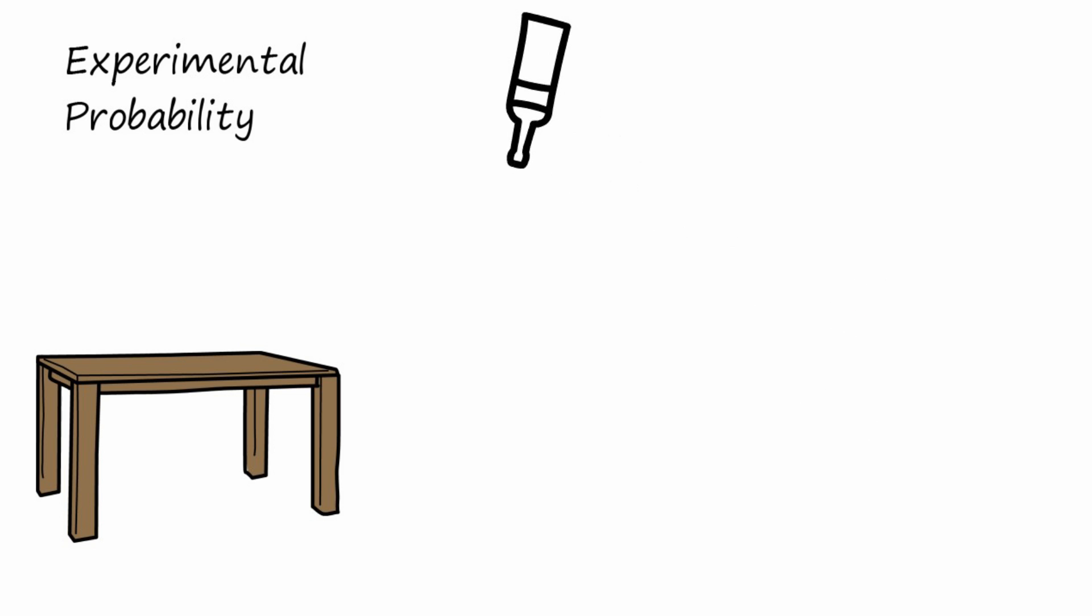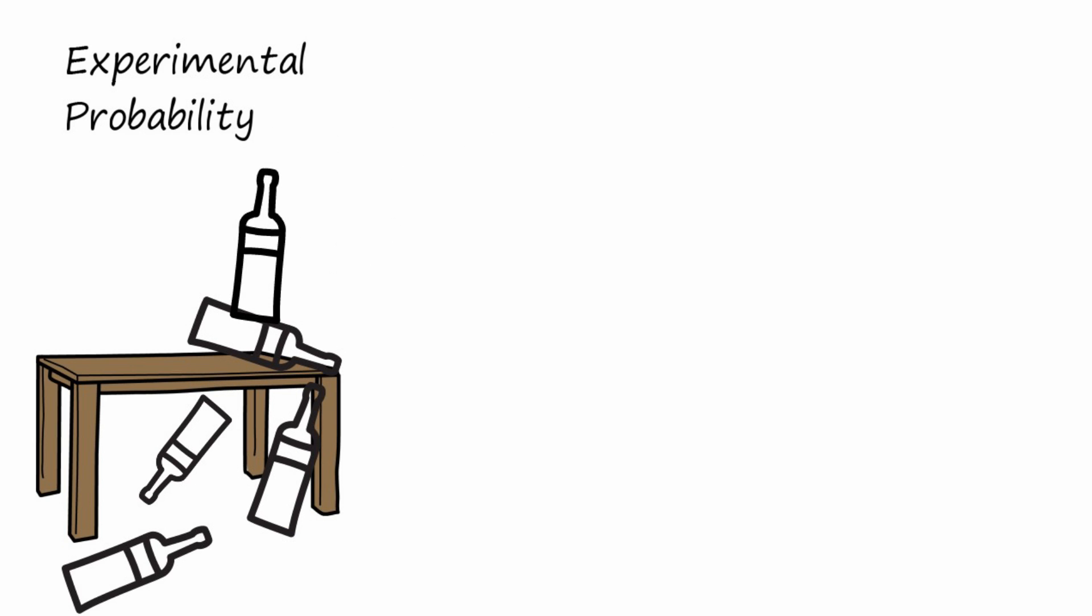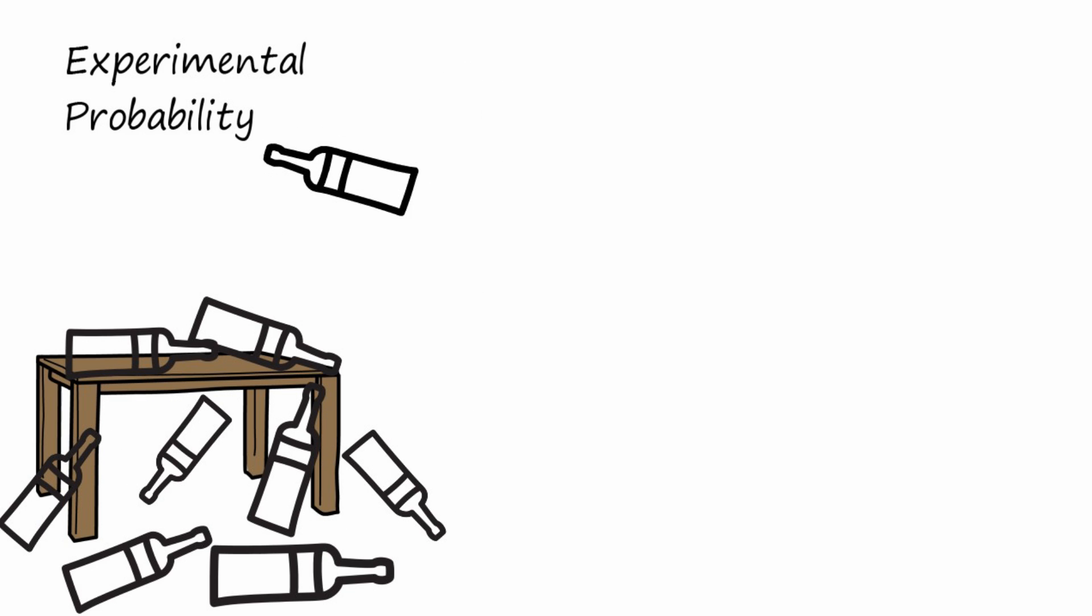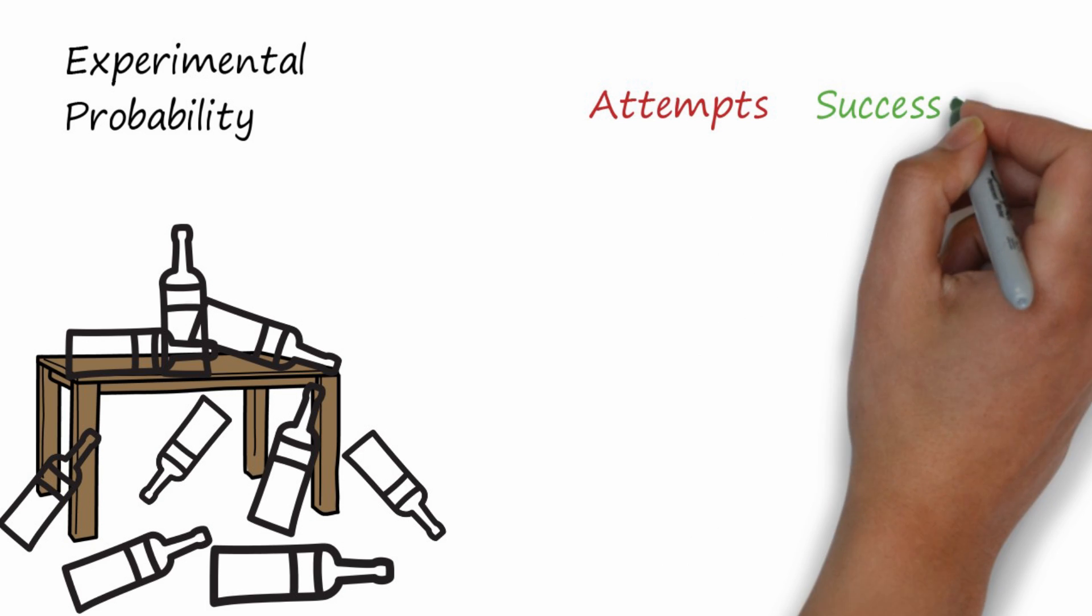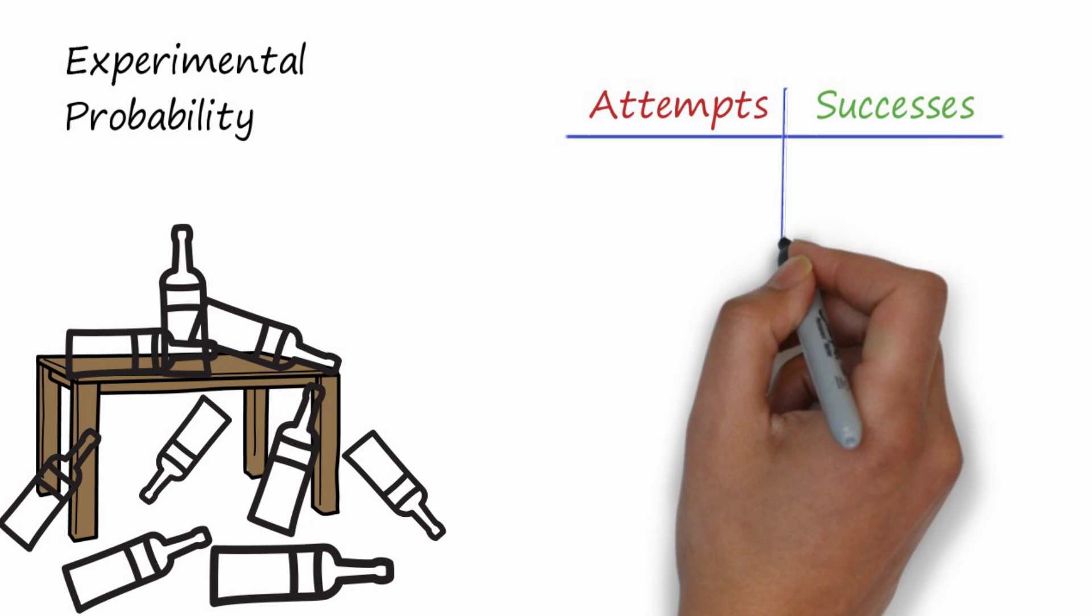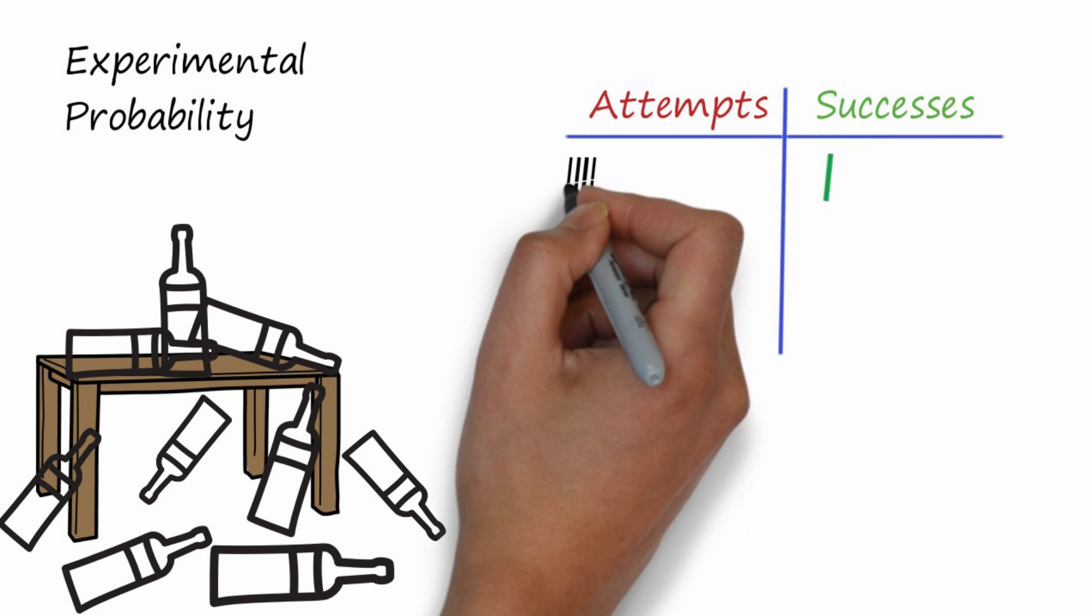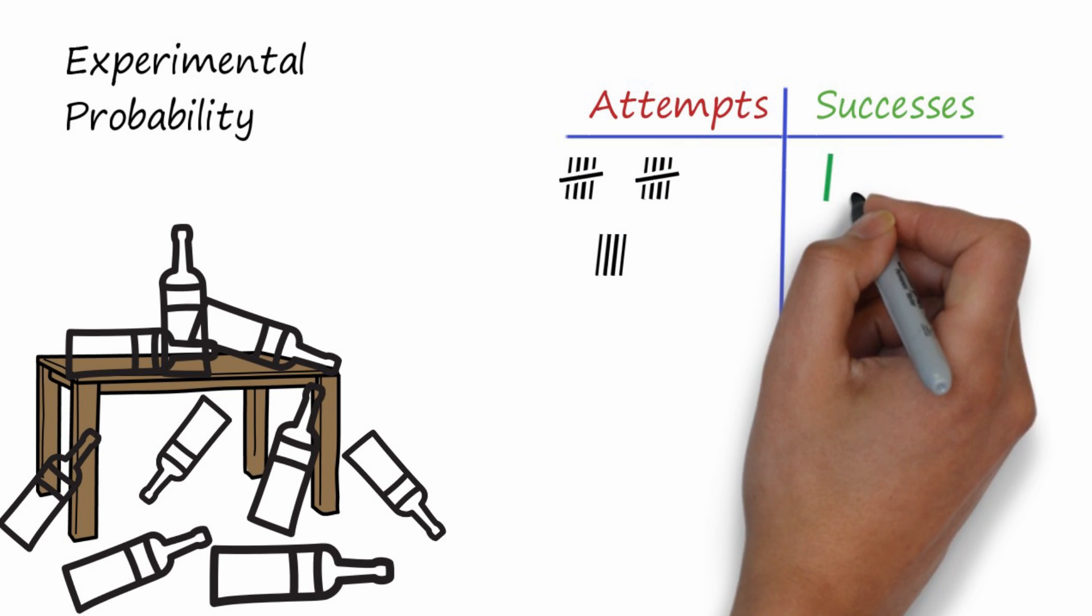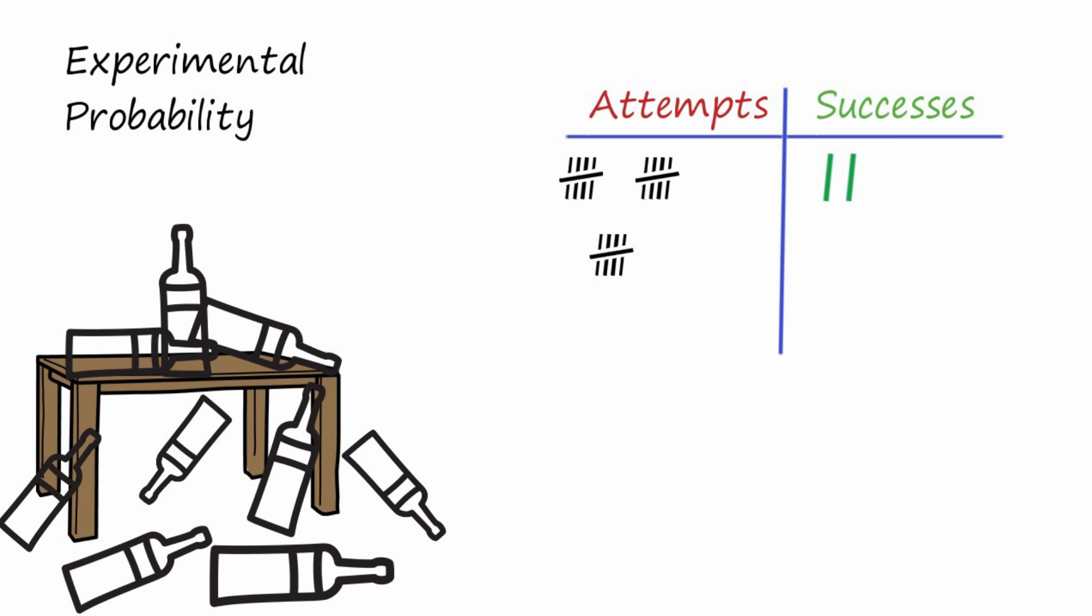We're going to do this time and time again, and it might be many attempts and many failures until finally the bottle lands in the position that you're looking for. This is called a success. But we don't want to stop after one success. We make a table of our attempts, we keep track of our successes. But even after you get the first success, you want to do a lot more attempts because really you need an average. Experimental probability to be valid.